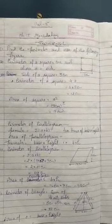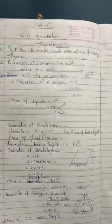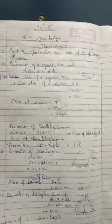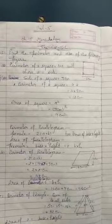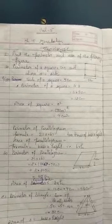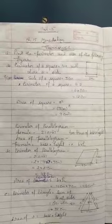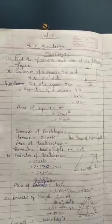So, perimeter of a square is given by 4a units, where a is the side. Side of the square equals 3 cm, which is given. Then, perimeter of the square, we will apply the formula: 4a means 4 multiply by 3 cm. That is 12 cm. It is the perimeter of square.